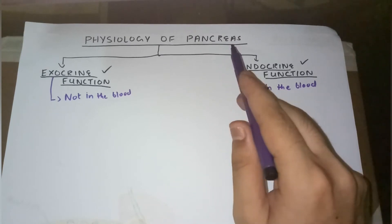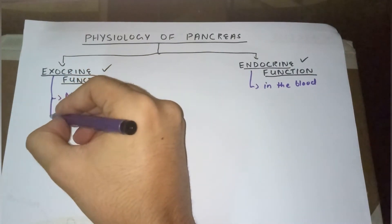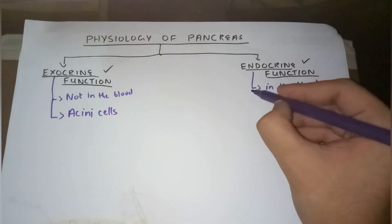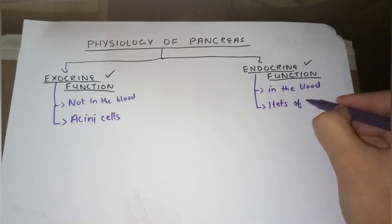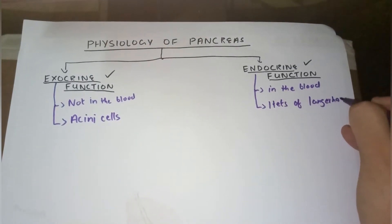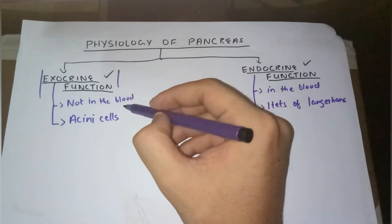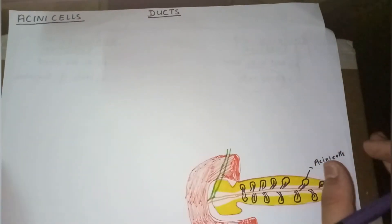The pancreas is a very important organ because it has both exocrine and endocrine functions. The cell types responsible are: acinar cells, which perform the exocrine function, and the islets of Langerhans, which perform the endocrine function. In this video we are only going to discuss the exocrine function of the pancreas.